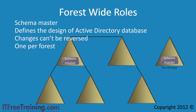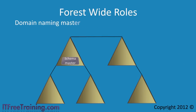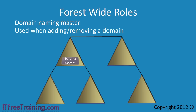The next forest-wide operational master role is the domain naming master. The domain naming master is used whenever you add or remove a domain from the forest. It ensures that two domains are not added with the same name. If the domain naming master is not available, you will not be able to add or remove any domains in the forest. This role is only on one domain controller in the forest. Due to the schema master and domain naming master not being used very often, Microsoft recommends both of these roles be stored on the same server for ease of administration.